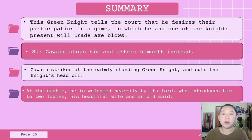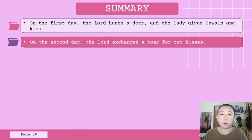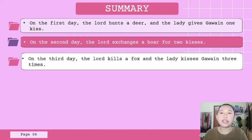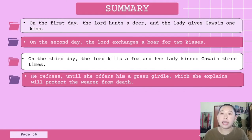It soon becomes clear that the prize at court is the host's beautiful wife. On the first day, the lord hunts a deer and the lady gives Gawain one kiss. When the men meet for dinner, the lord presents Gawain with the meat, and befitting the deal, Gawain exchanges it for the kiss he has received. On the second day, the lord exchanges a boar for two kisses. On the third day, the lord kills a fox and the lady kisses Gawain three times. Furthermore, the lady asks for a love token from Gawain. When he claims he has nothing to give, she starts offering him tokens of her own. All tokens were refused by Gawain until she offers him a green girdle, which she explains will protect the wearer from death. Hopeful that the girdle might protect him from the Green Knight, Gawain accepts and hides it under his cloak to keep it secret from the lord.